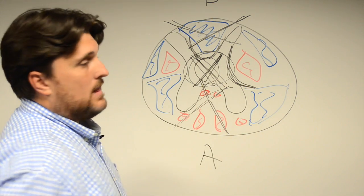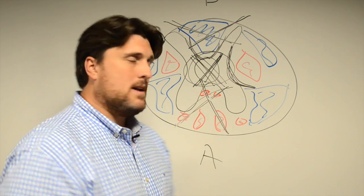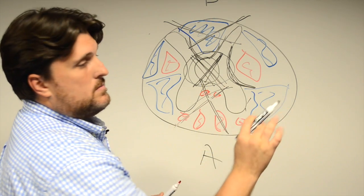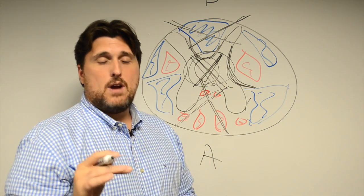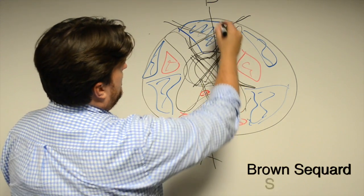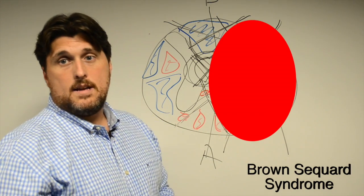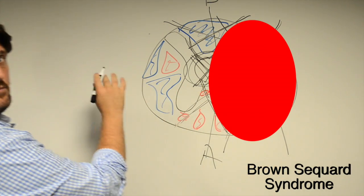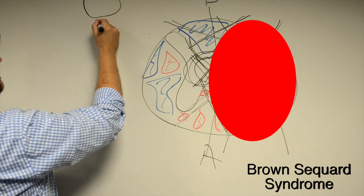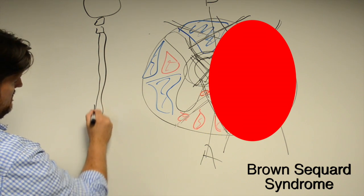Now, spinothalamic tract, which brings us to Brown-Sequard syndrome. Our spinothalamic tracts are on the lateral borders, but most importantly with Brown-Sequard syndrome, you essentially take a line straight down the middle and damage one side completely. Now to understand this, let me move over a little bit and let's go over our spine. So if this is our skull and our vertebrae and our spinal cord.